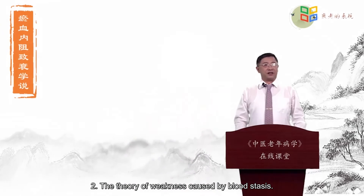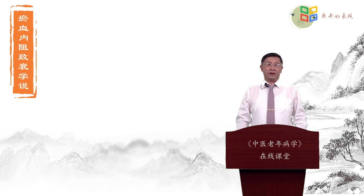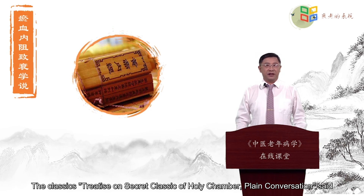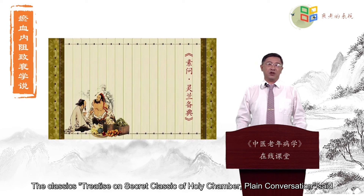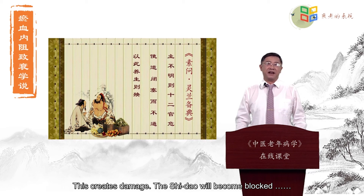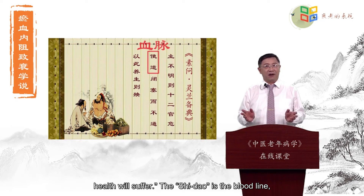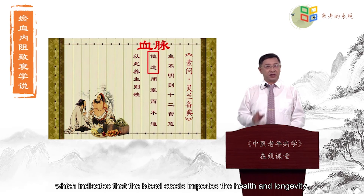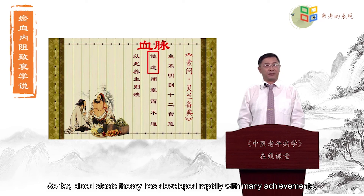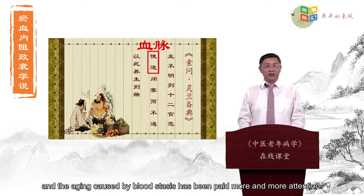The theory of weakness caused by blood stasis originated from Huangdi Neijing. The classics Plain Conversation said: if the spirit is distributed and unclear, the other organs will not function properly. This creates damage, the meridians will become blocked, and health will suffer. This indicates that blood stasis impedes health and longevity. So far, blood stasis theory has developed rapidly with many achievements, and aging caused by blood stasis has been paid more and more attention.